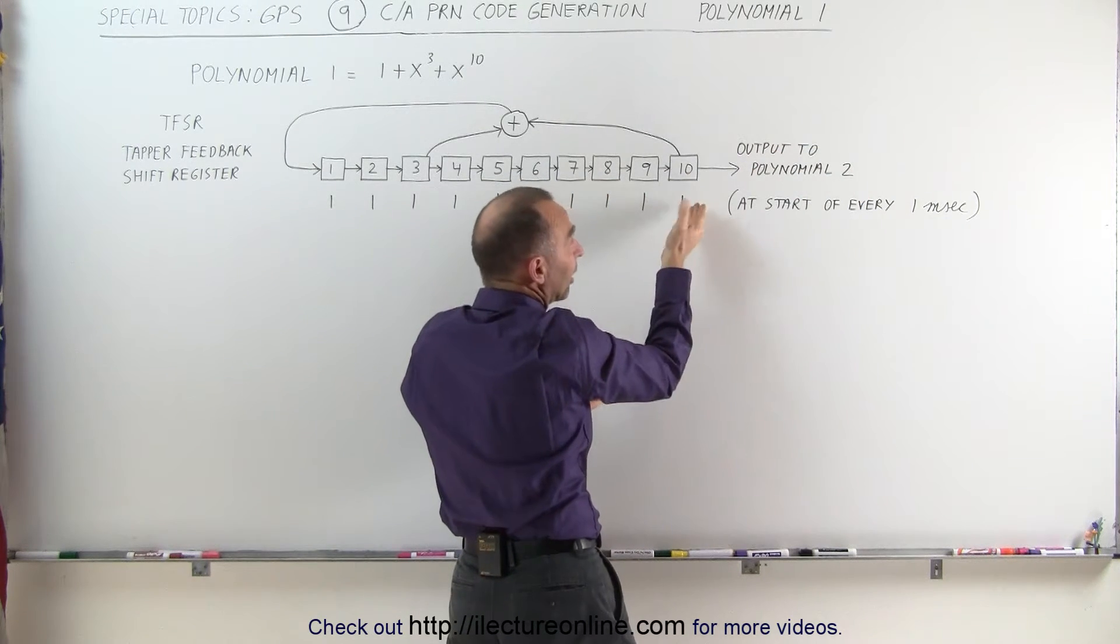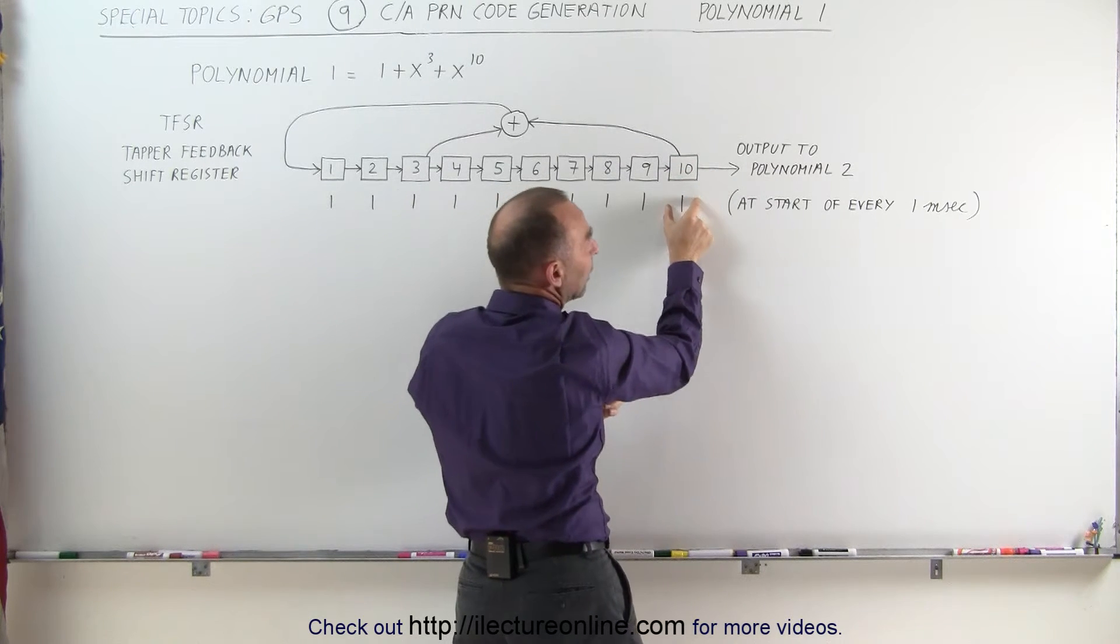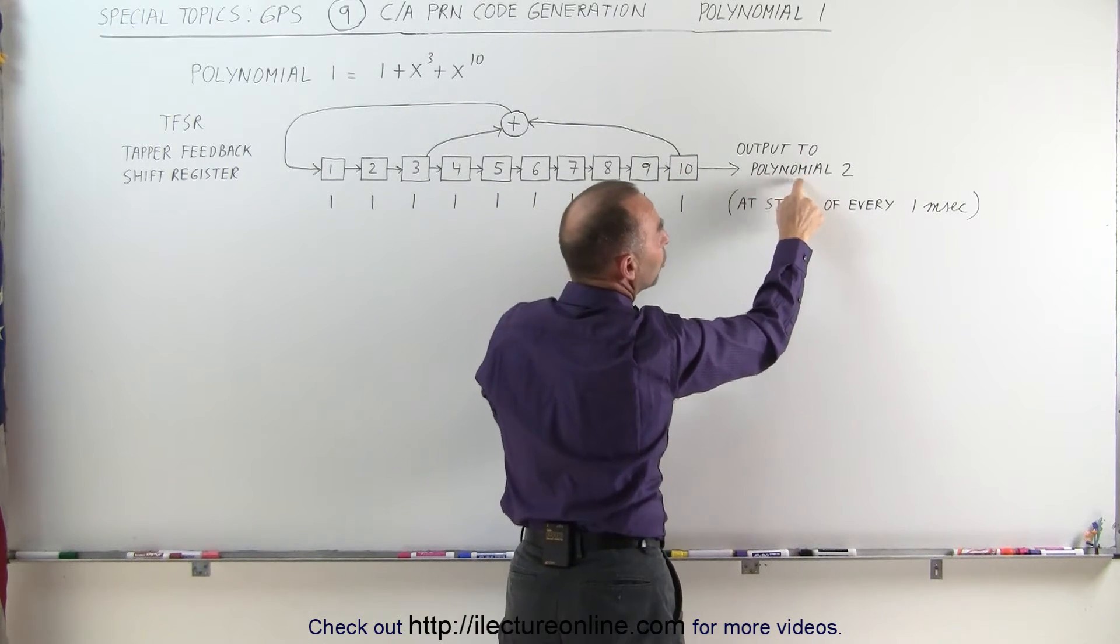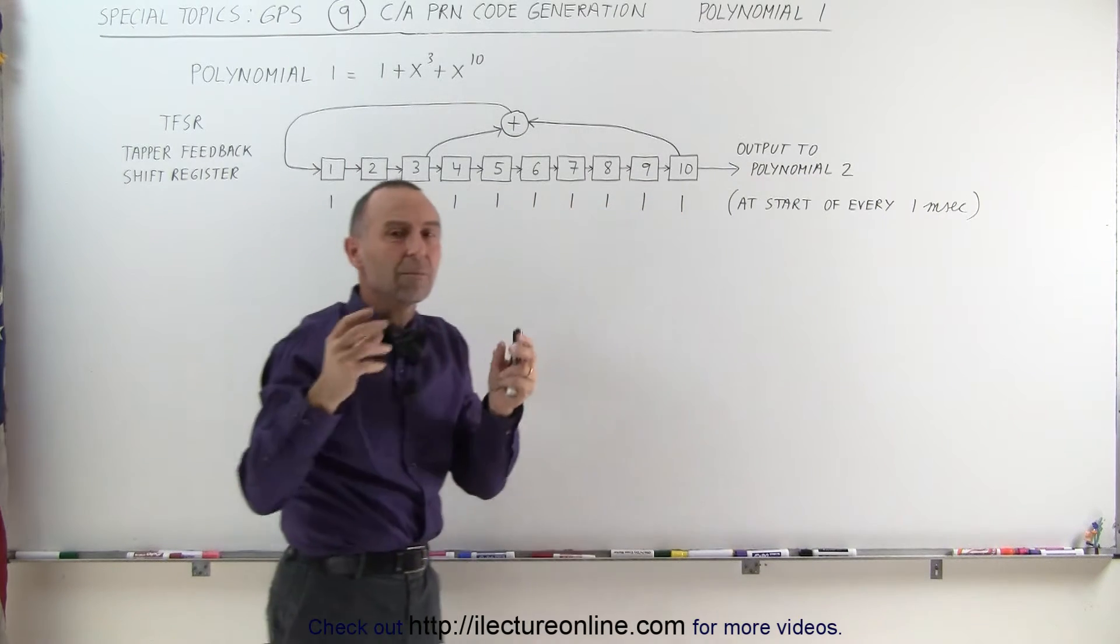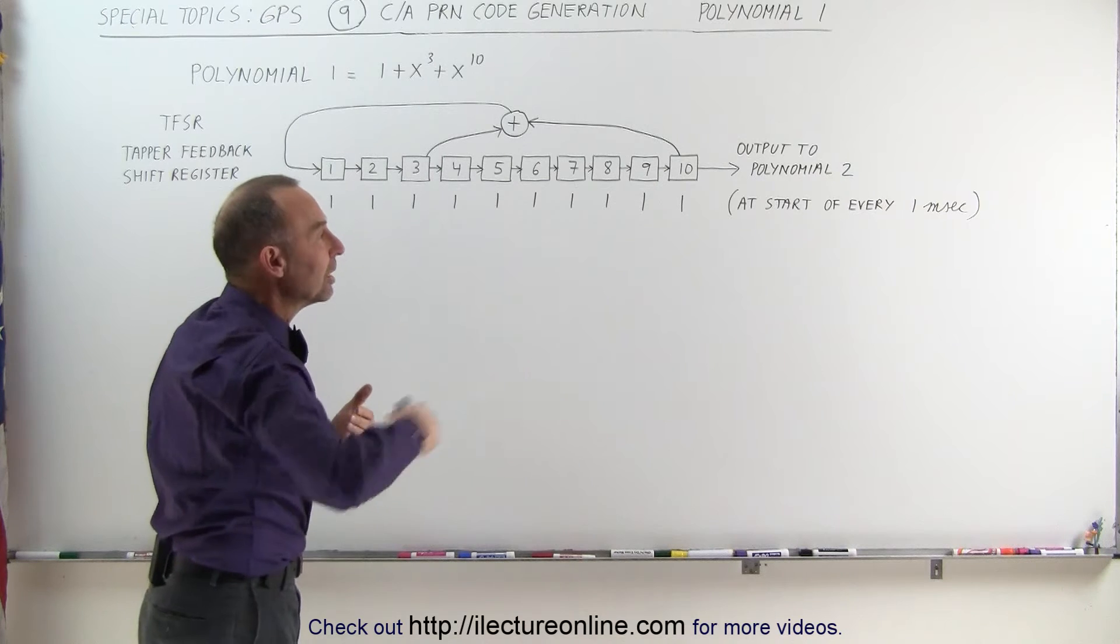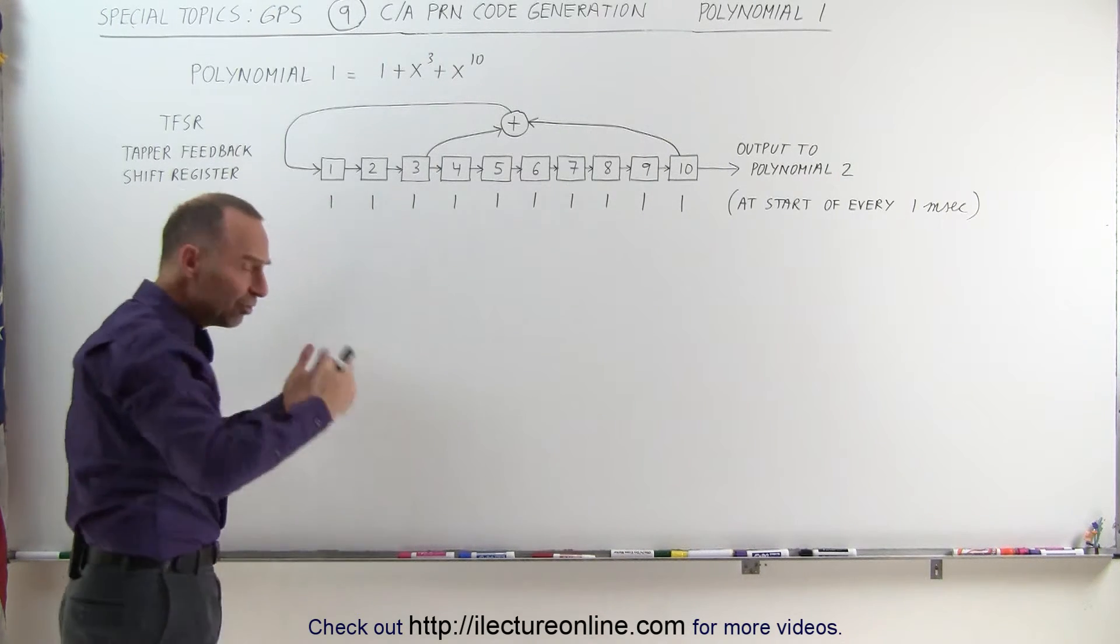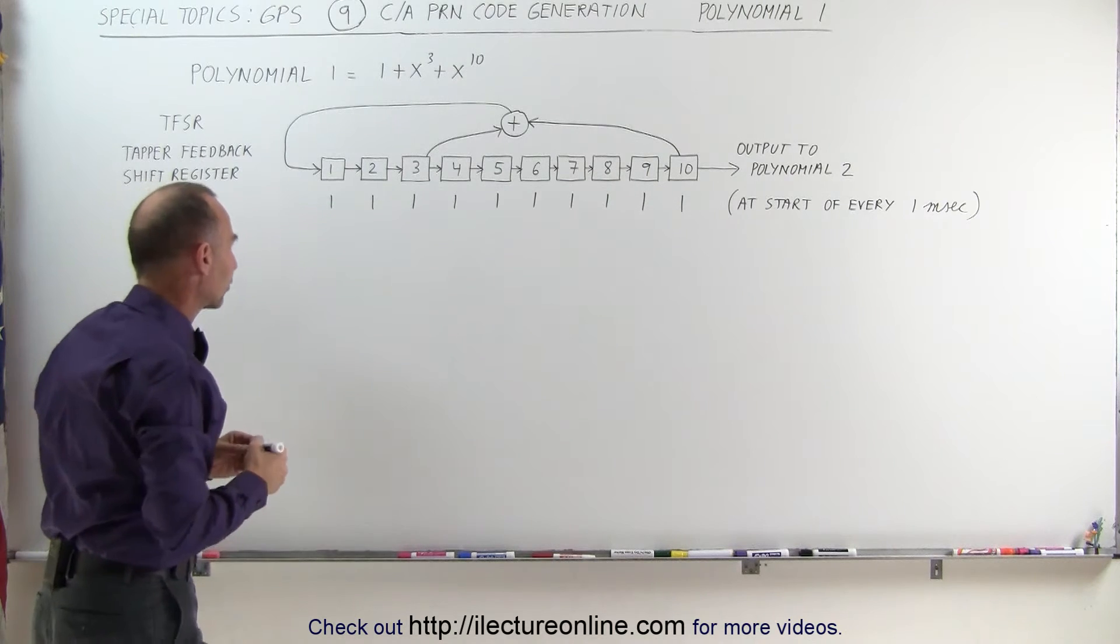Whatever the contents are in position 10 will be sent out to polynomial 2 to be summed with the summation of some bits of that second polynomial, then to be sent out as the code going out from the satellite to the receiver. And we'll step through the process so you can see how this works.